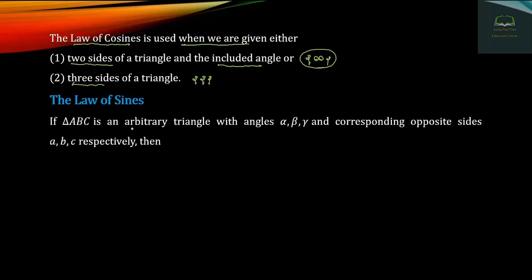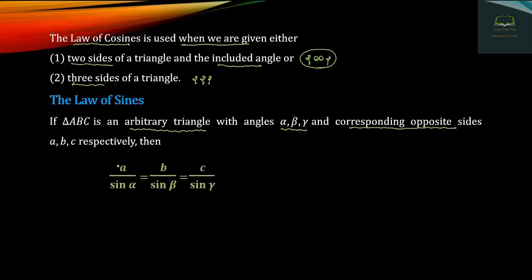Now we have triangle ABC. We will see that alpha + beta + gamma = 1. The law of sines states: a / sin alpha = b / sin beta = c / sin gamma.